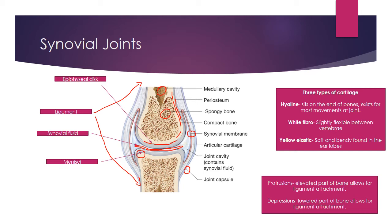One further thing to be aware of is protrusions and depressions. A protrusion refers to an elevated part of the bone that allows for ligament attachments. A depression is the same concept but goes inward — a little depression that also allows ligaments to easily attach to the surface.